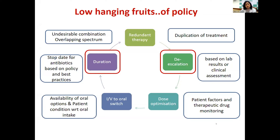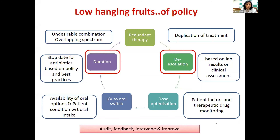Low-hanging fruits in audit include redundant therapy — undesirable combinations, overlapping spectrum, or duplication — which pharmacists can easily identify and feed back to clinicians. Dose optimization — correct doses, duration — can also be looked into easily, as can IV-to-oral switch where appropriate. Duration and de-escalation are more challenging and require mutual trust, but starting from low-hanging fruits motivates the team. The strategy is: audit, feedback, intervene, and improve.